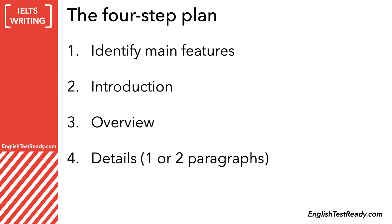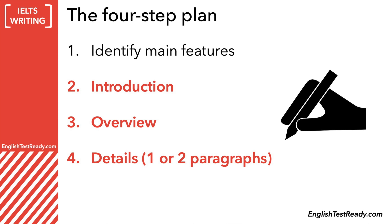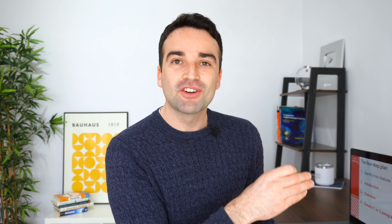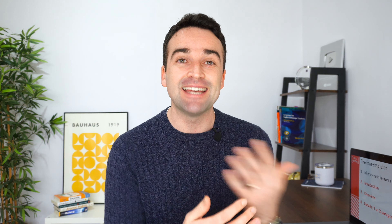Once you've finished planning, it is time to start writing, and steps two to four help you with that. Steps two to four are all about writing — we have an introduction, an overview, and then details. The IELTS criteria is very clear: you should include all three sections in your answer. Examiners will look for each section: introduction, overview, and then detailed paragraphs.